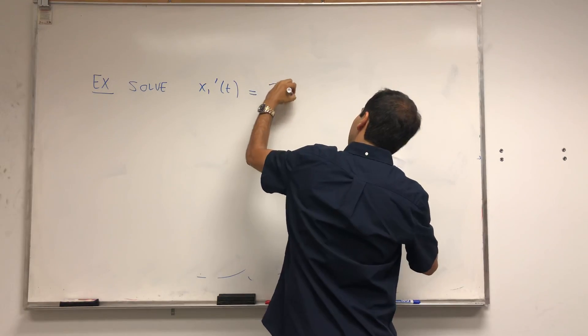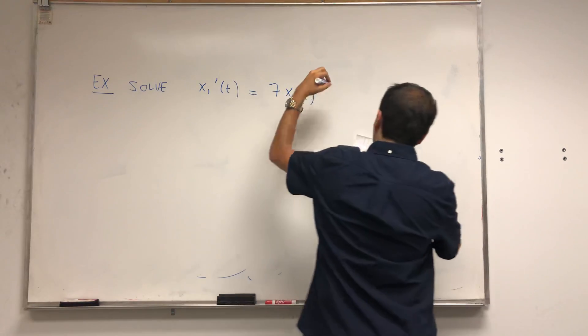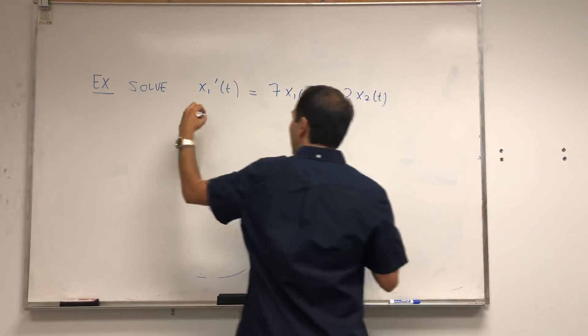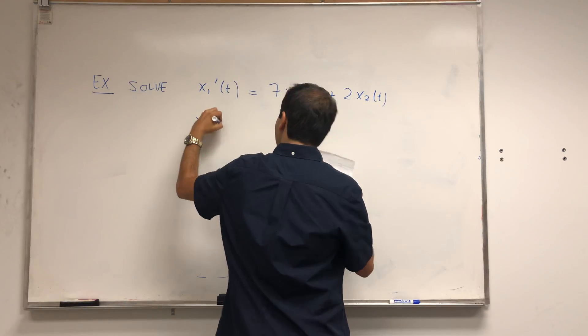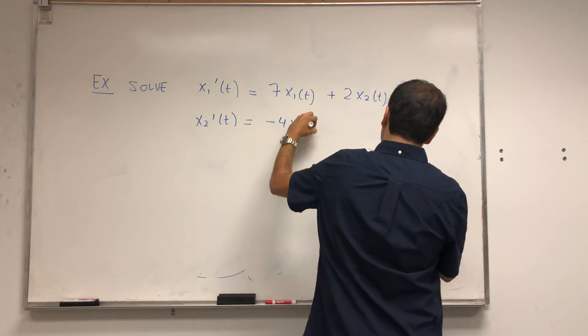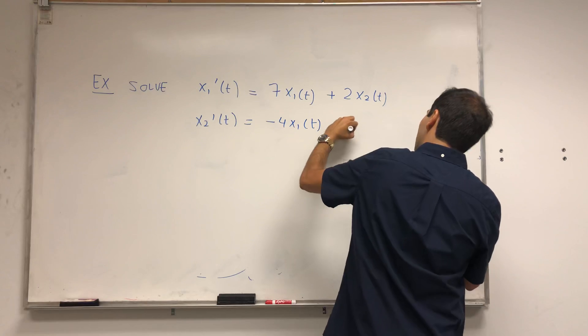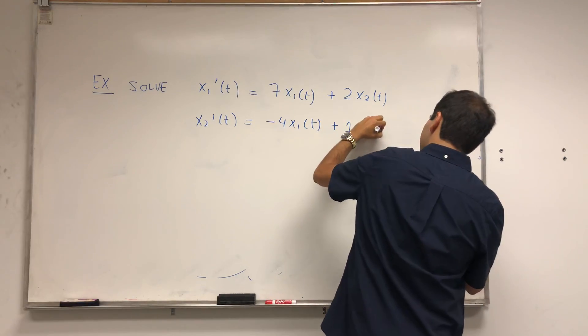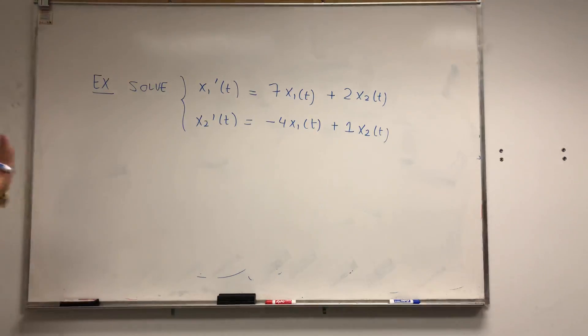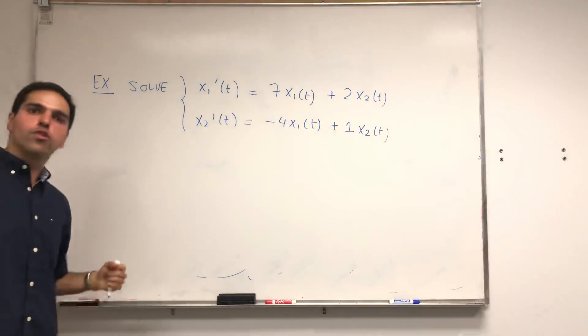For instance, let's solve the following system: x1 prime of t is 7x1 of t plus 2x2 of t, and x2 prime of t is minus 4x1 of t plus 1x2 of t.